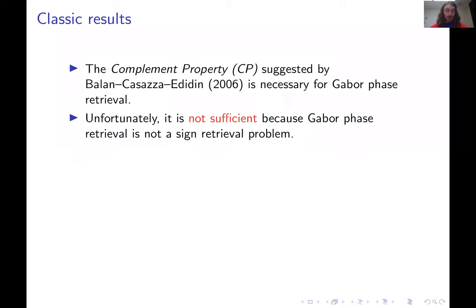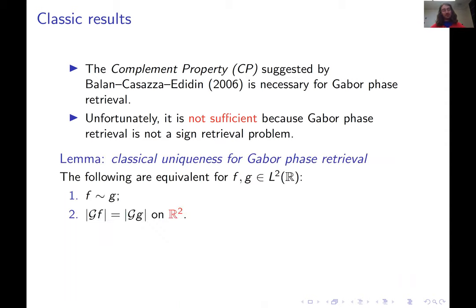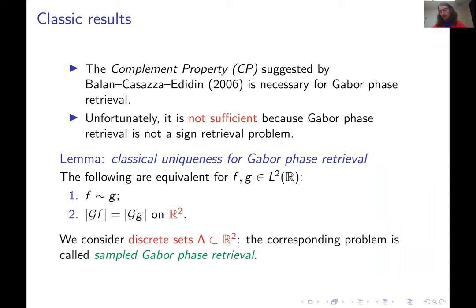Fortunately, there is also a classical uniqueness result for Gabor phase retrieval. What it says is that you can recover any square integrable function from its Gabor magnitude, provided that you have access to this Gabor magnitude on the entire time frequency plane R². Today we don't want to consider this kind of problem; we want to consider a slightly harder problem where instead of having access to measurements on the entire time frequency plane, we have access only on a discrete subset of the time frequency plane. Such a problem we call a sampled Gabor phase retrieval problem.